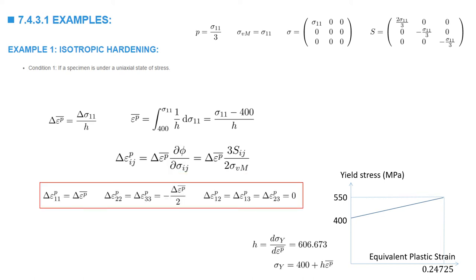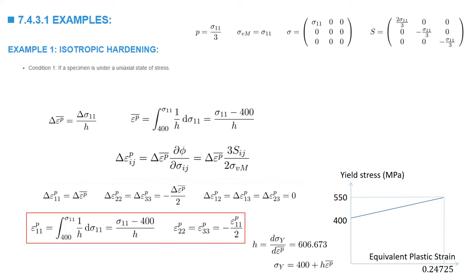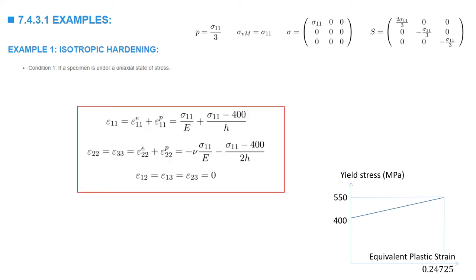Substituting the components of S and noting that sigma_von_Mises equals sigma_1, we confirm that delta epsilon_plastic_11 equals the increment of equivalent plastic strain, the other two components equal negative one-half times the equivalent plastic strain increment, and all shear plastic strains are zero. The total strain epsilon_1 equals the sum of elastic and plastic components: the elastic part is always sigma_1 over E, and the plastic part is obtained from the flow rule. The same applies for epsilon_22 and epsilon_33; all shear strains are zero.